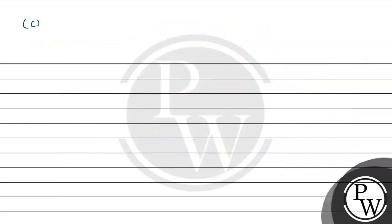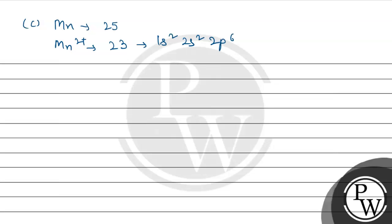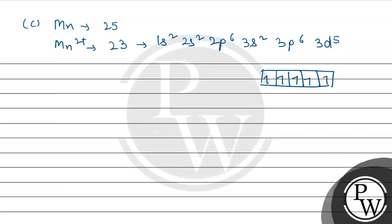But let us also check option C — Mn²⁺. Manganese has atomic number 25 and 25 electrons. With Mn²⁺, two electrons are lost, leaving 23 electrons. The electronic configuration is 1s², 2s², 2p⁶, 3s², 3p⁶, 3d⁵. All 5 d-electrons are unpaired, so n = 5. Therefore μs = √(5 × 7) = √35 = 5.91 Bohr magneton. So this is not the answer.